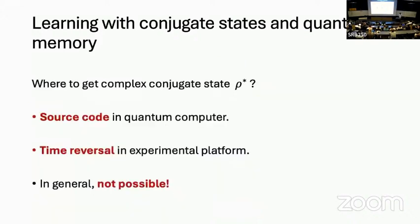Before defining our task, how do we get this complex conjugate state? In general, it's not possible — you should really think of it as a resource that isn't always available, but sometimes it would be.